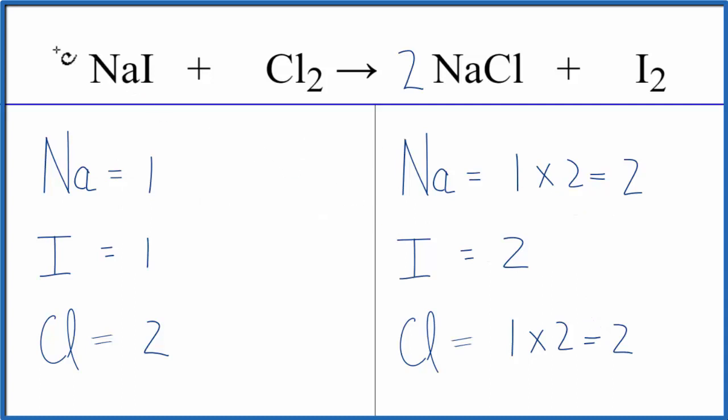We could balance the sodium atoms by putting a two in front of the NaI. So we have one times two, that gives us two. Those are balanced. And the two applies to the whole compound here, so we have one of the iodine atoms times the two, gives us two of those. And this equation is balanced.